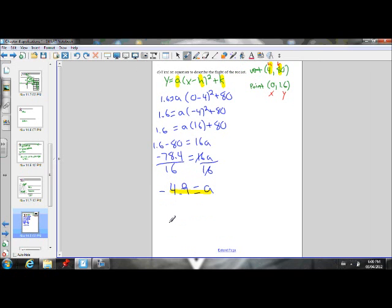So I can go ahead and do that. Let's do it in red. The final equation is Y equals negative 4.9. Oh, that doesn't look too nice. Y equals negative 4.9. That's better. X minus H. H is 4. Squared plus K, which is 80. There's my equation.